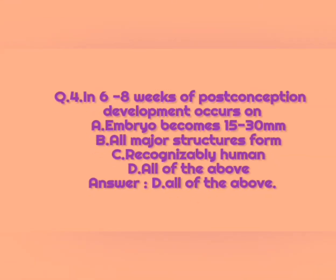Question number four: In six to eight weeks of post-conception, development occurs on — option A: embryo becomes 15 to 30 mm, option B: all major structures form, option C: recognizably human, option D: all of the above. The correct answer is option D, all of the above.